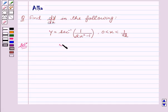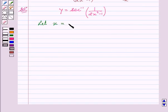y equals secant inverse 1 over 2x squared minus 1. Now let x equal cos theta. This implies theta equals cos inverse x.